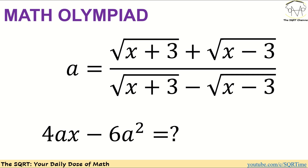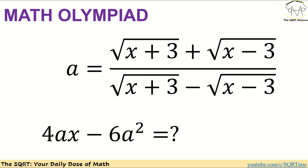Hello everyone, welcome to the SQRT channel. In this video we are going to evaluate the expression you see here. This expression is kind of interesting — we are given a big expression for a, where a is defined as (√(x+3) + √(x-3)) / (√(x+3) - √(x-3)). The only difference between the top and bottom of this fraction is the plus and minus.